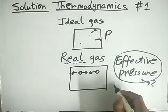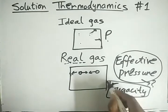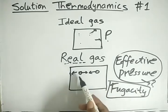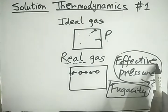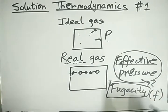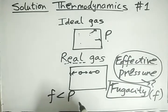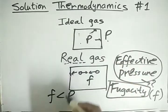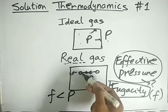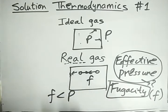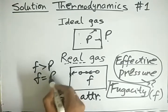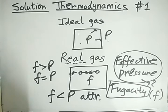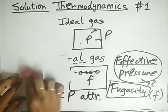The answer is fugacity, and that's how fugacity was born. For a real gas where molecules have some interaction, the effective pressure they exert is called fugacity, denoted by F. Now F is less than P if there is a force of attraction. If F is greater than P, there is a repulsion tendency of the molecules. If F equals P, it is an ideal gas.